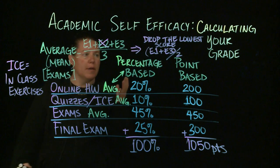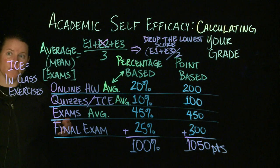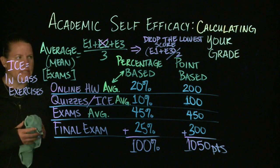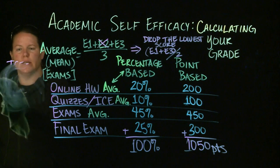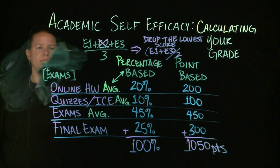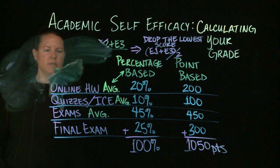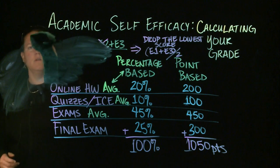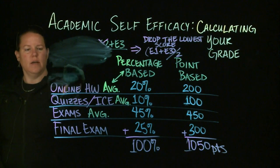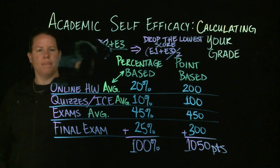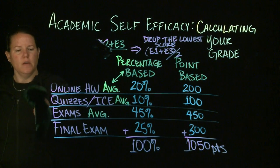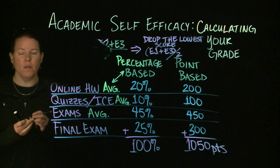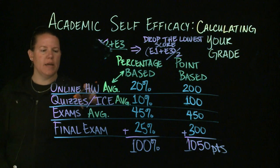When you're talking about a percentage-based class, what am I going to do with this average once I have it? With the percentage-based class, here's what we're doing. When I say online homework, the average of the online homework is 20%. Then you're going to take whatever that online homework average was.